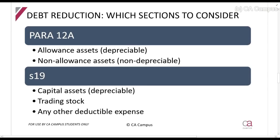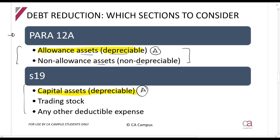These are the sections that apply. We apply paragraph 12A if there is an asset — whether depreciable or non-depreciable. For an allowance asset, paragraph 12A and section 19 both apply. In section 19, you apply it to the recoupment side, the trading stock side, and any other expense that was incurred. For a non-allowance asset, only paragraph 12A applies.